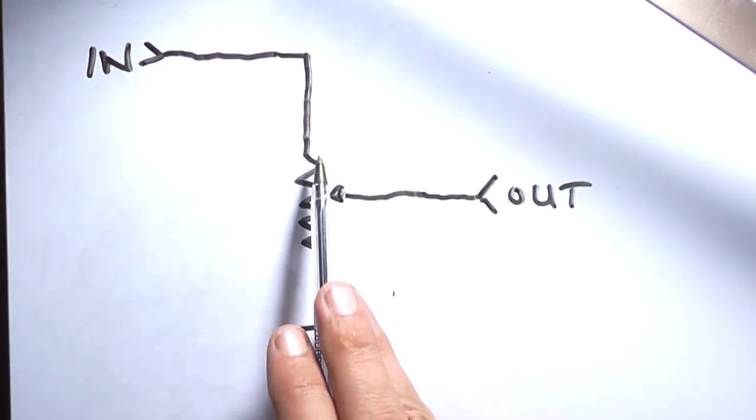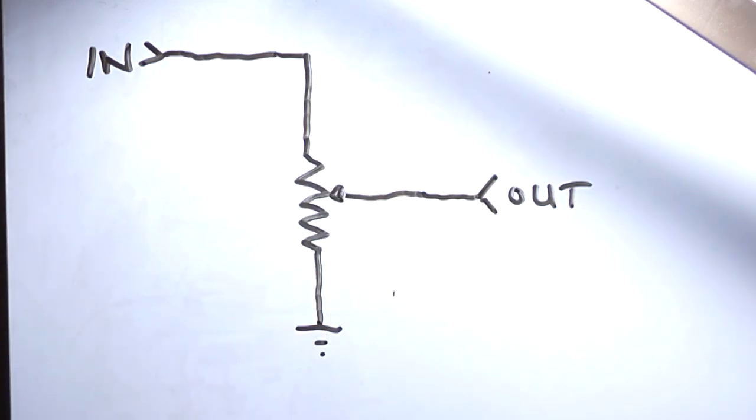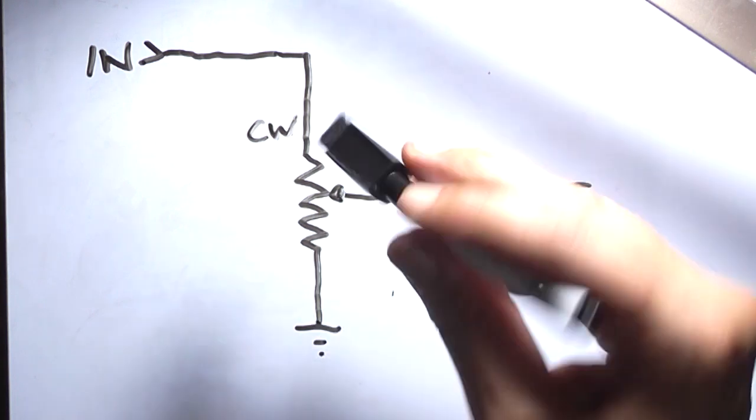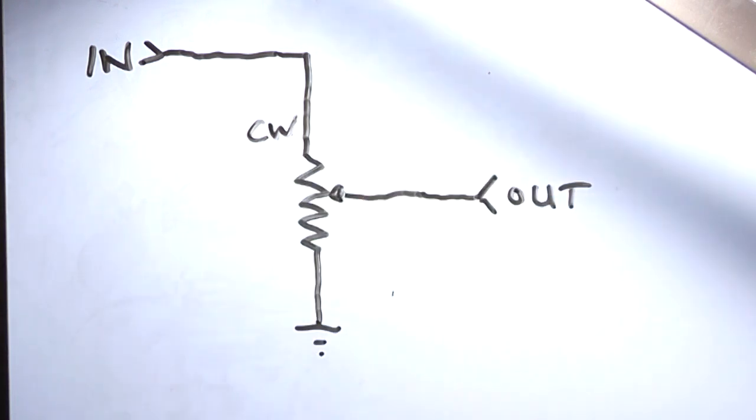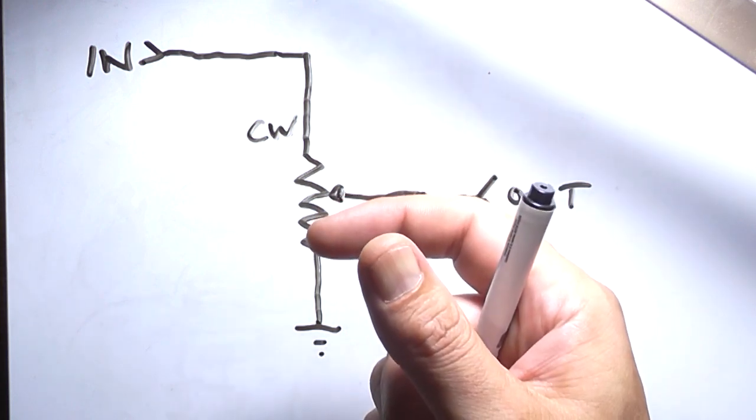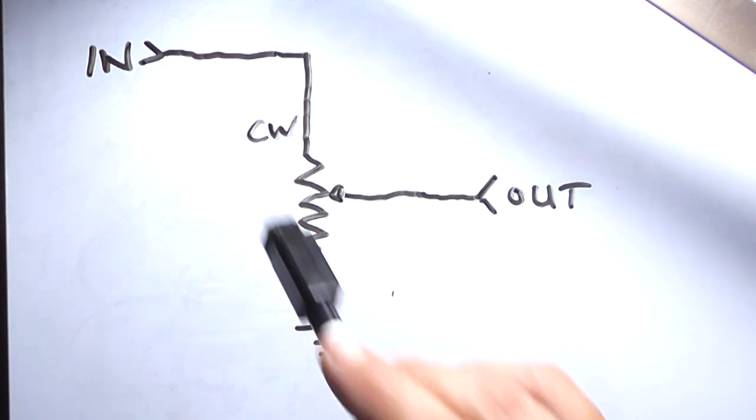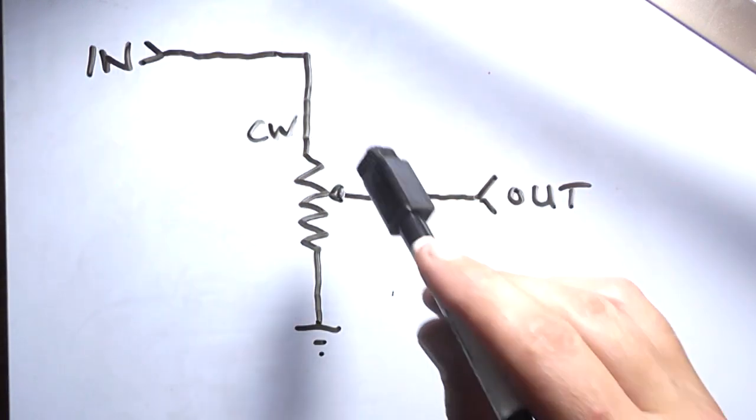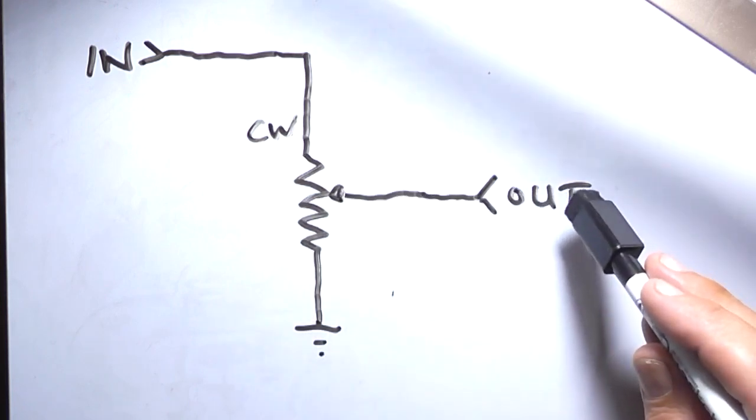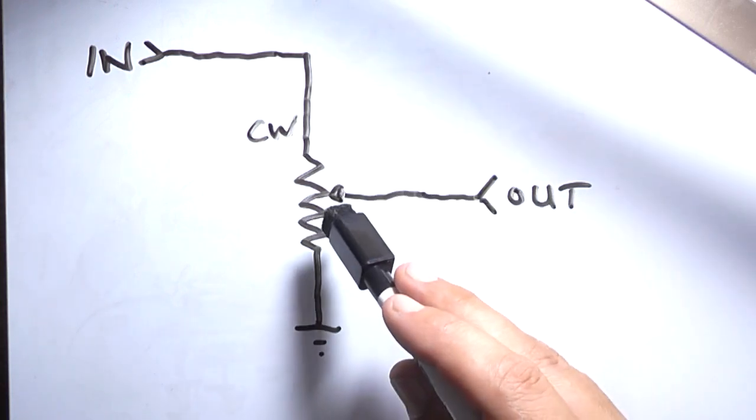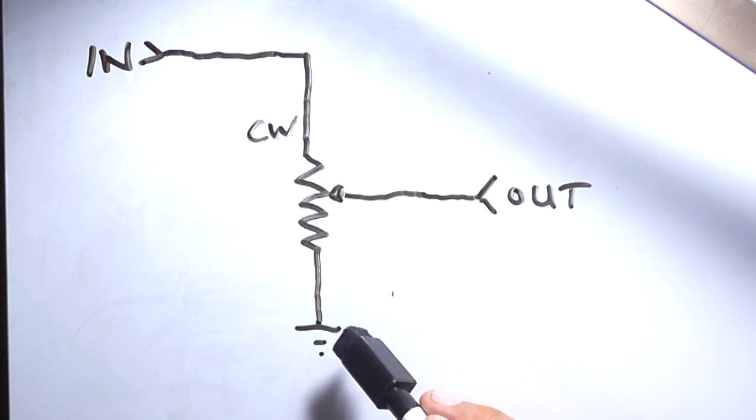You have your input coming in to usually the clockwise position. Because if it's wired the reverse way around where the ground and the clockwise are inverse, then maximum control rotation will be minimum. So usually the input comes in on the clockwise position, comes out of the wiper which is the center, and the ground is then connected to the counterclockwise position.